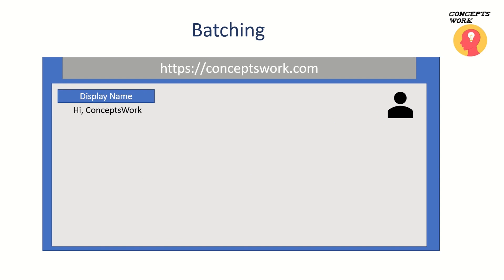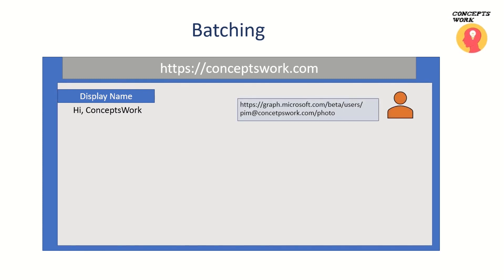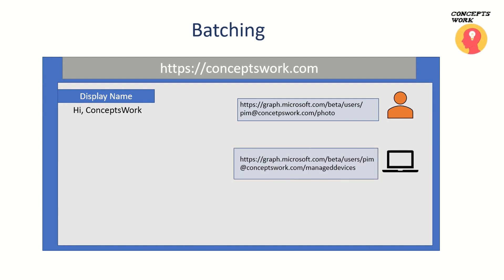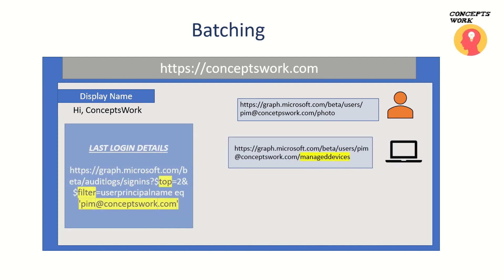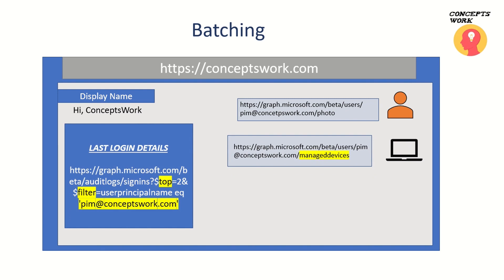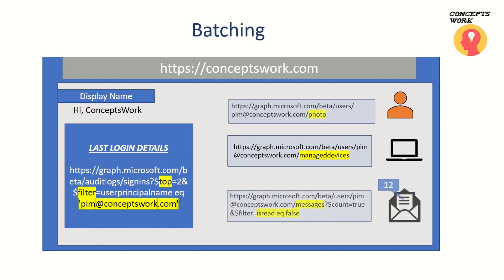But let's say I also want to access the photo of this particular user — in that case I have to navigate to a specific URL. Next, I want to access the devices that belong to this user, or which they own. Similarly, I also want to show the last two sign-in attempts made by this user — the platform, browser, or device used. And lastly, I want to show the number of unread emails in this user's mailbox.